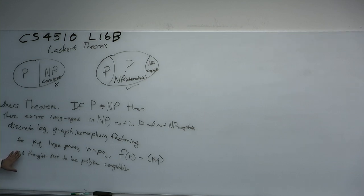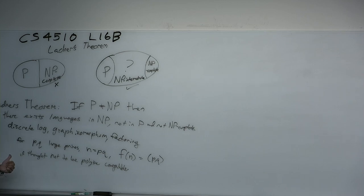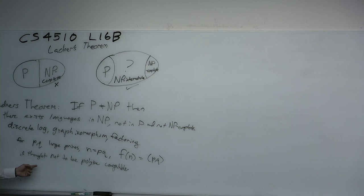Why is factoring in NP? You can check by just multiplying the factors. Multiplication is polynomial-time computable, so your witness would be the factors, and then you just check that they're correct. So why don't we think factoring is NP-complete? Certainly it's in NP. Intuitively, just experimentally, it appears not to be in P — we can't find fast algorithms for it. But why don't we think it's NP-complete?